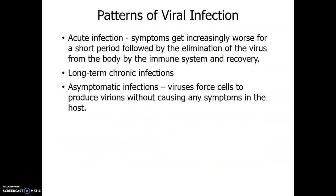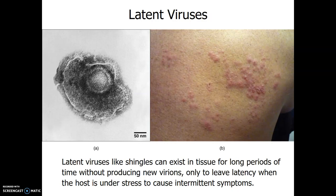Patterns of viral infection — infections can be acute, chronic, or even asymptomatic. An acute infection is when symptoms get increasingly worse and then the immune system eliminates the virus from the body. If it's chronic, you're probably going to have it for life — it's a long-term infection. And some viruses actually cause no symptoms at all, so they're asymptomatic.